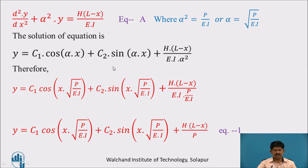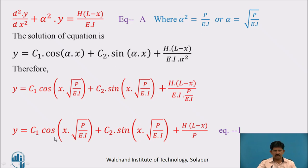The solution of this differential equation is: Y = C₁ cos(αX) + C₂ sin(αX) + H(L − X)/(EI·α²). Substituting back α = √(P/EI) and α² = P/EI, and cancelling EI terms, we get: Y = C₁ cos(X√(P/EI)) + C₂ sin(X√(P/EI)) + (H/P)(L − X). This is equation number 1.